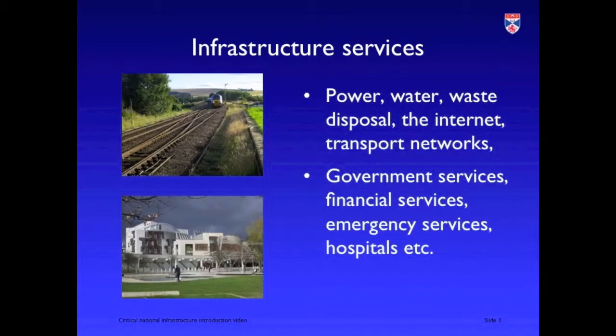It's the whole range of things that we depend on in order to have an effectively functioning modern society. The kind of services we're talking about are communication services, energy services, distribution services, transport networks — all of these things that allow us to move people and goods and energy and data around the country.